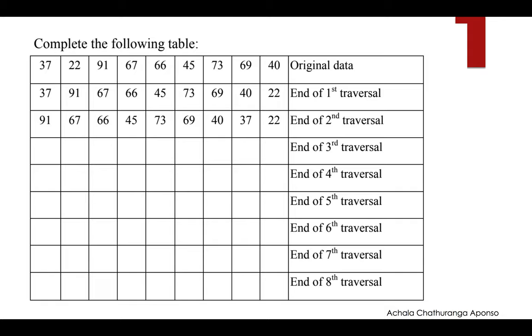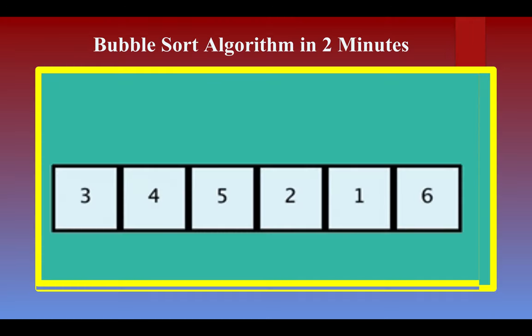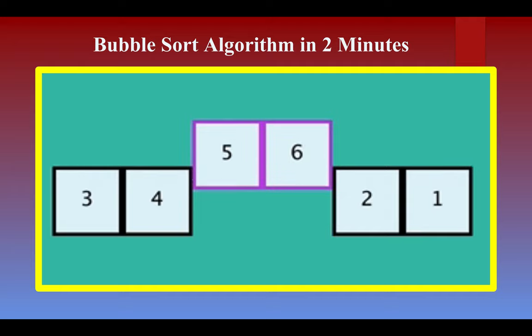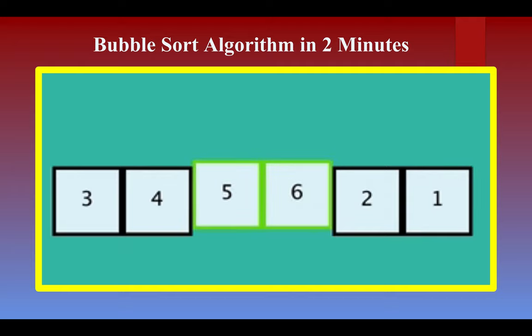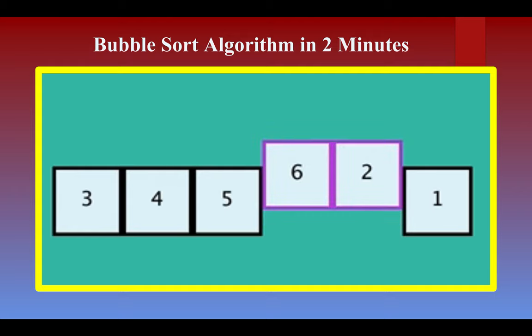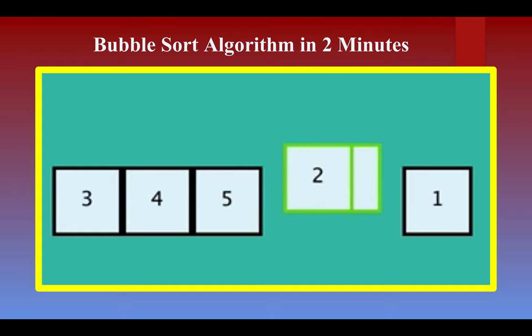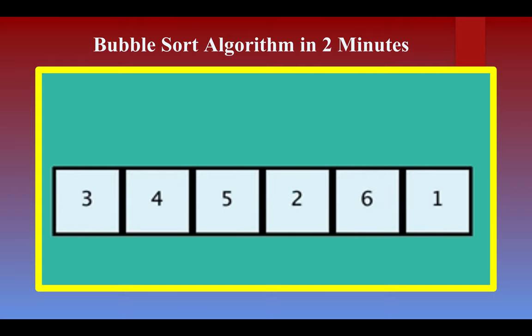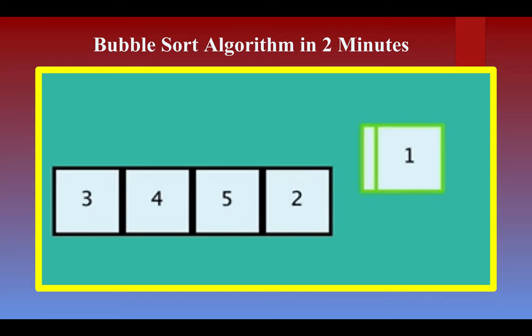That is about the descending approach. Next we will have a look at a demonstration of the ascending order. Bubble sort with numbers: 3, 4, 5, 2, 1, 6. We have a set of numbers and will try to arrange them in ascending order. The process for one traversal is the same for all traversals until the set is sorted.